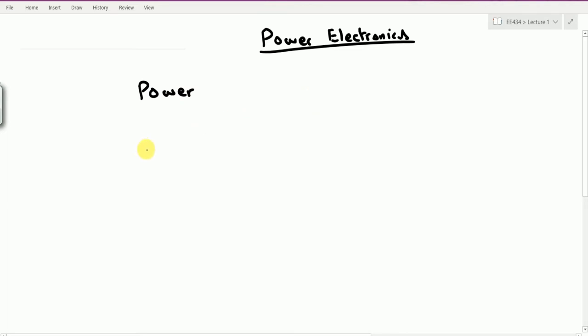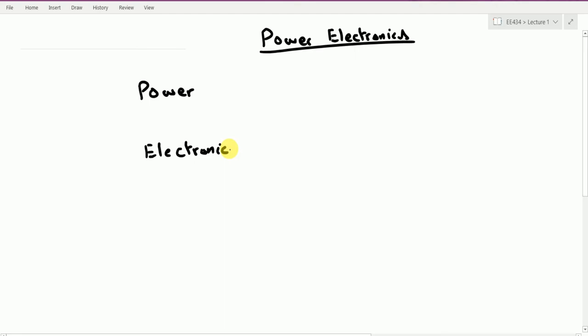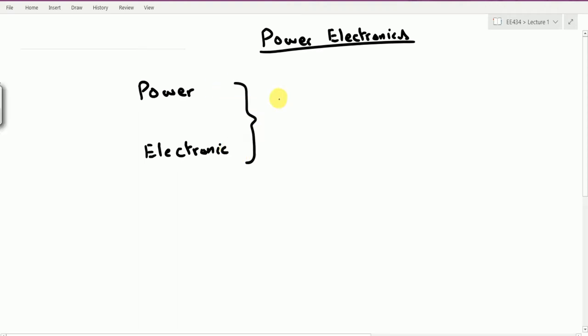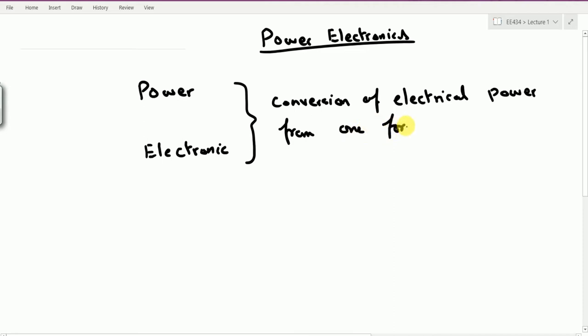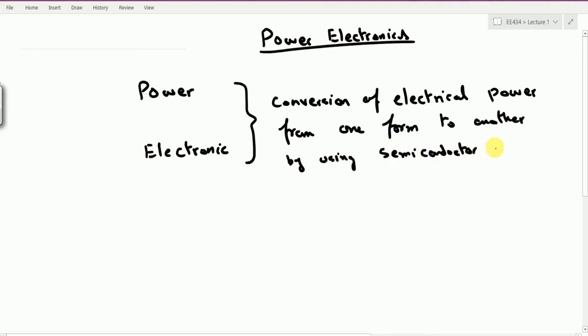Power electronics has two words: one is power and the second is electronics. It is not actually a combination of electrical power and the traditional or small signal electronics that we study. Rather it deals with the control of power through the use of semiconductor devices that act as a switch. So we have the conversion of electrical power from one form to another, or from one form to a similar form but with different output specifications, all accomplished by using semiconductor devices as switches.